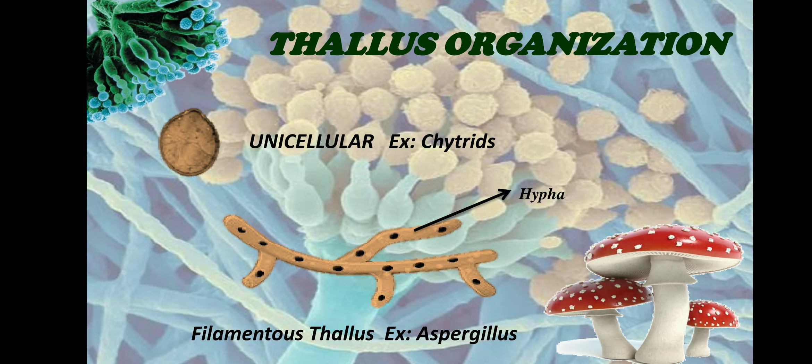Let us now move into the thallus organization of fungi. Thallus means a plant body which is not differentiated into stem, leaves, and roots. Any plant body — whether algae or fungi — that is not differentiated into stem, leaves, and roots is called a thallus.